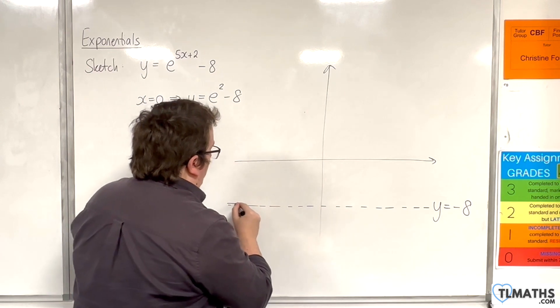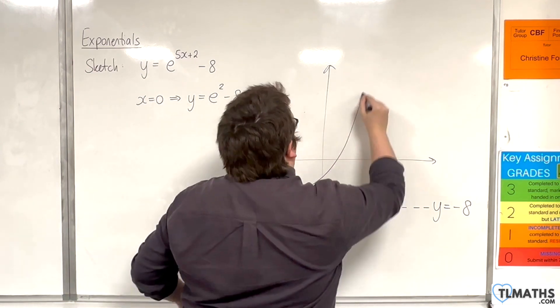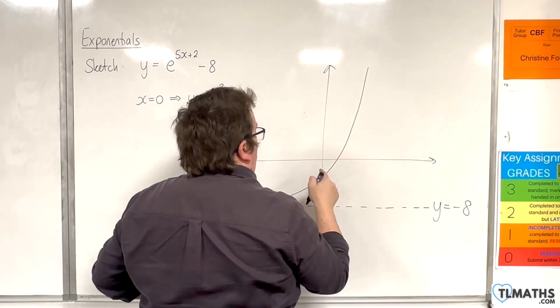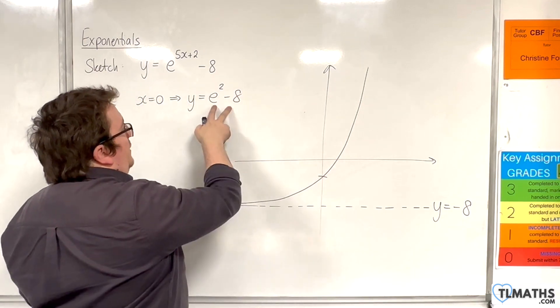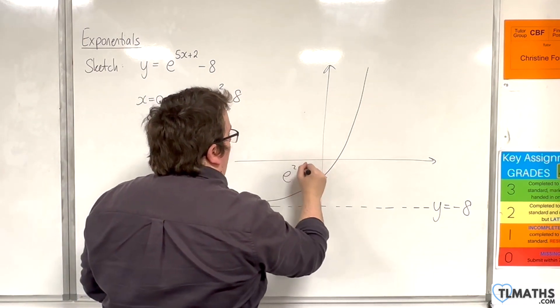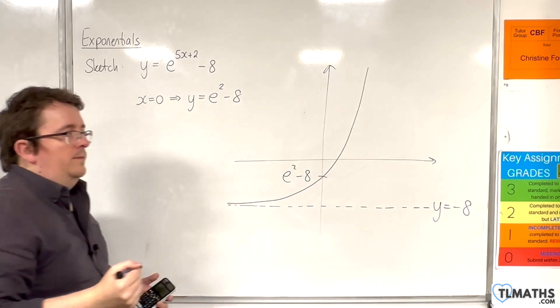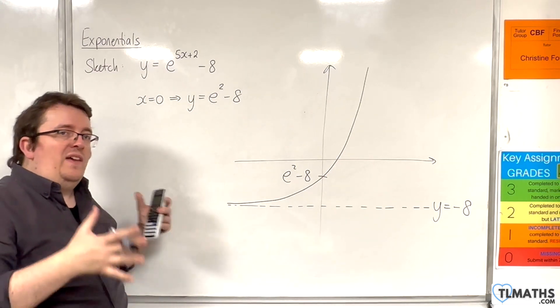So I can safely sketch my curve, doing something like that, so that this point where it crosses the y-axis is precisely at e squared take away 8. And I'm going to keep it in that exact form.